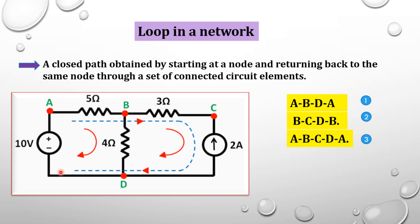To identify loops, we trace closed paths in the circuit. The first loop is A-B-D-A, which is a closed path returning to the starting node A. The second loop is B-C-D-B. If you start at a node and return to it through a closed path, that forms a loop. In this circuit, there are three loops total.